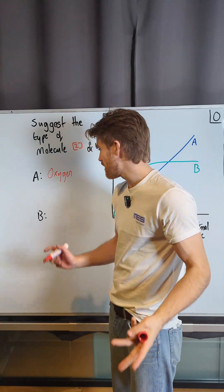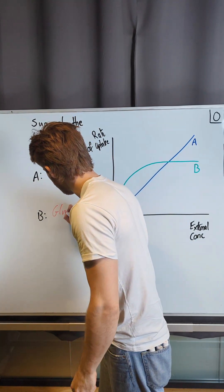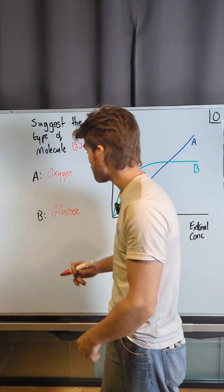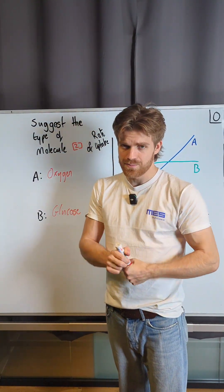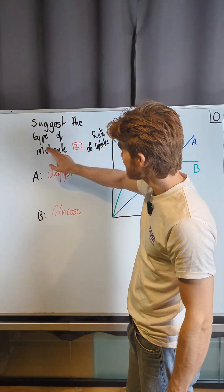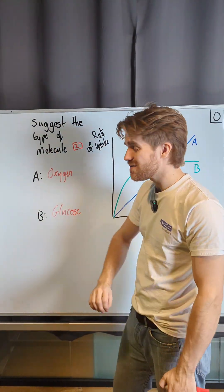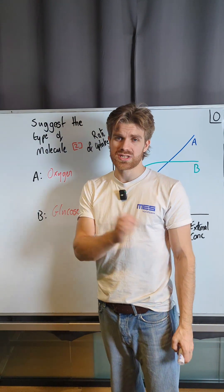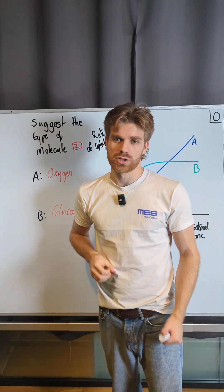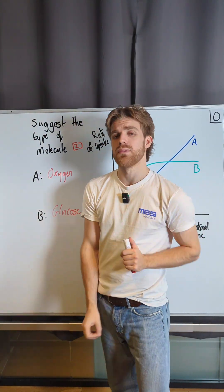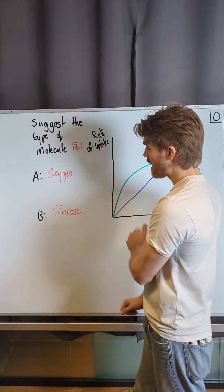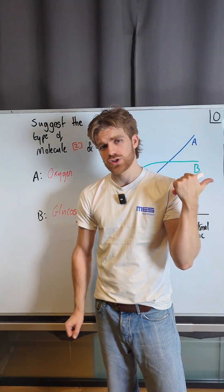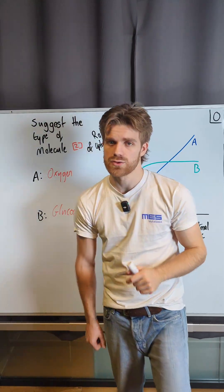So we're thinking something like glucose, or mineral ions like sodium or potassium. Now, when the question says suggest the type of molecule, we want to give a specific molecule. Just saying a non-polar molecule wouldn't be enough detail to get you the mark for this question. So did you get both of those correct? Make sure you give me a follow so you can get everything correct for your summer A-levels.